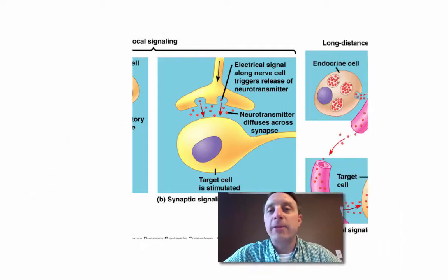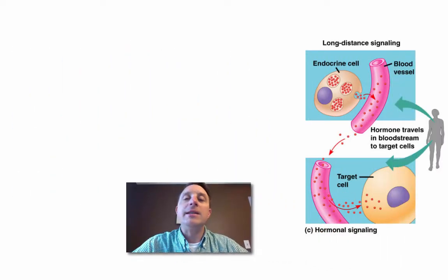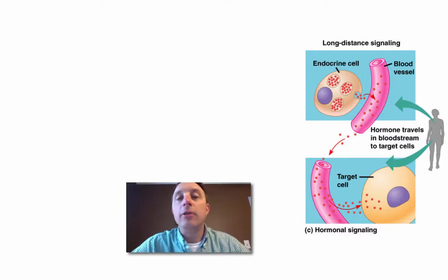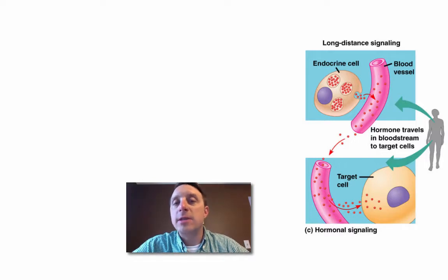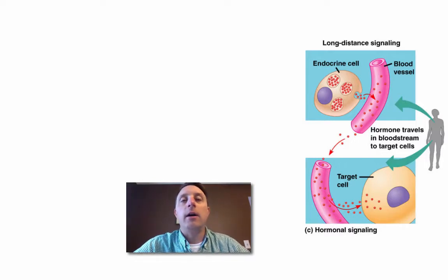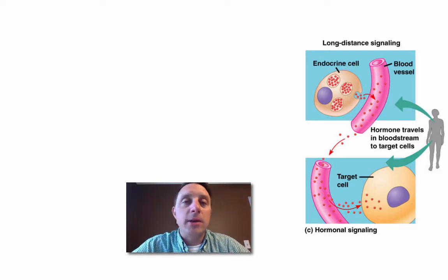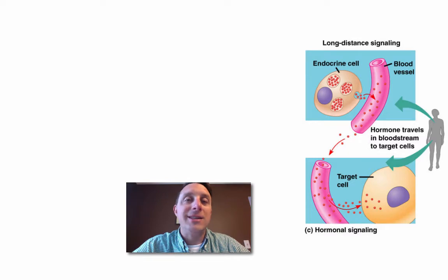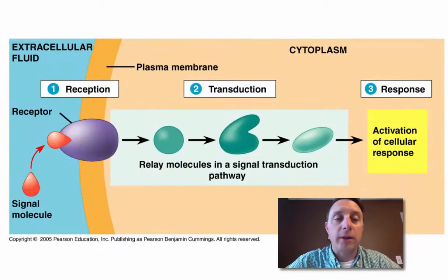The final type of cellular signaling is long-distance signaling, seen in the endocrine system with hormones. In this case, the two cells that are communicating can be very far apart on opposite sides of the body, where the signaling molecule is released into the bloodstream and can travel a very long distance to the target cell to elicit a response. We will see that with hormonal signaling.